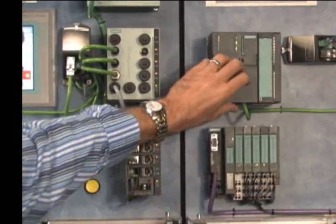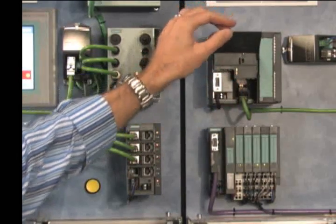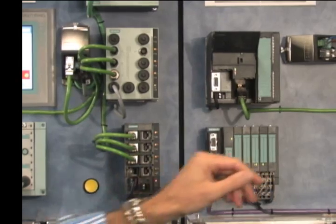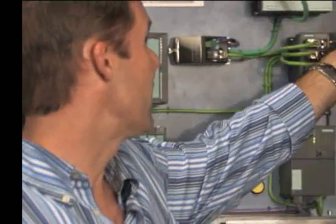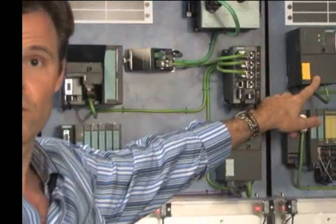The middle section here for labeling uses one of our standard S7-300 CPUs to do the control, whereas the packaging section uses the exact same controller, only it's in a fail-safe version.